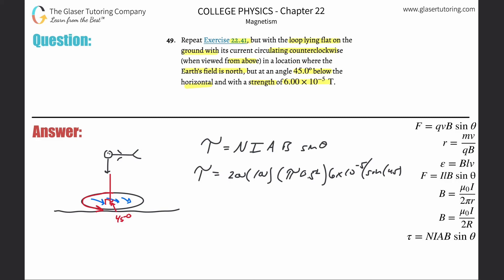So the torque is 200 multiplied by 100, multiplied by pi times 0.5 squared, then multiplied by 6 times 10 to the minus fifth, then multiplied by sine of 45. Make sure you calculate this in degree mode.